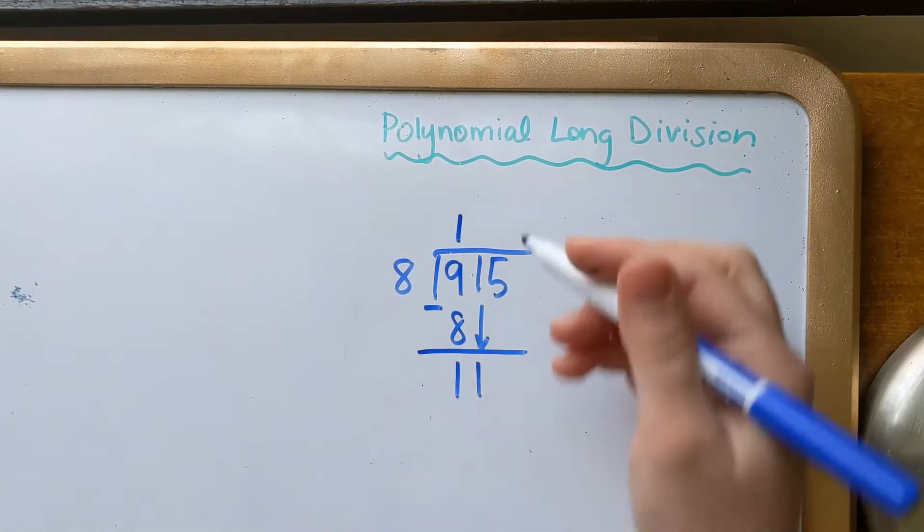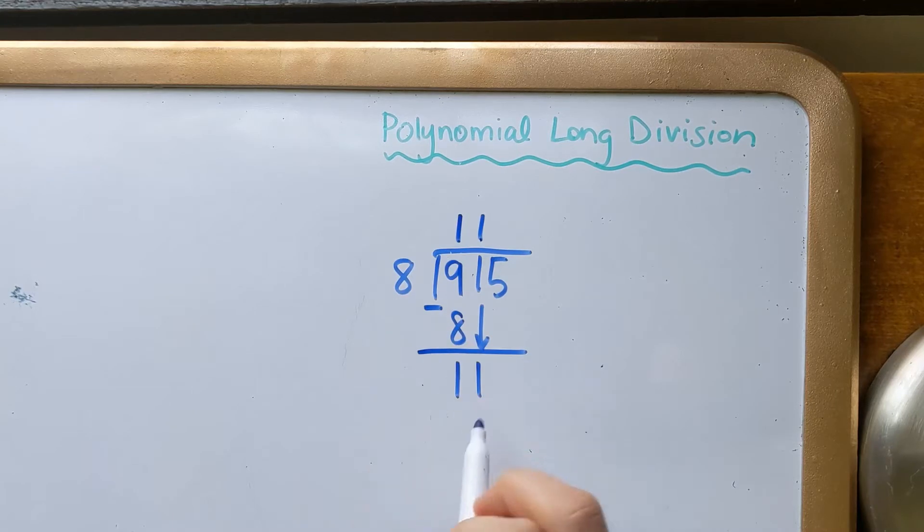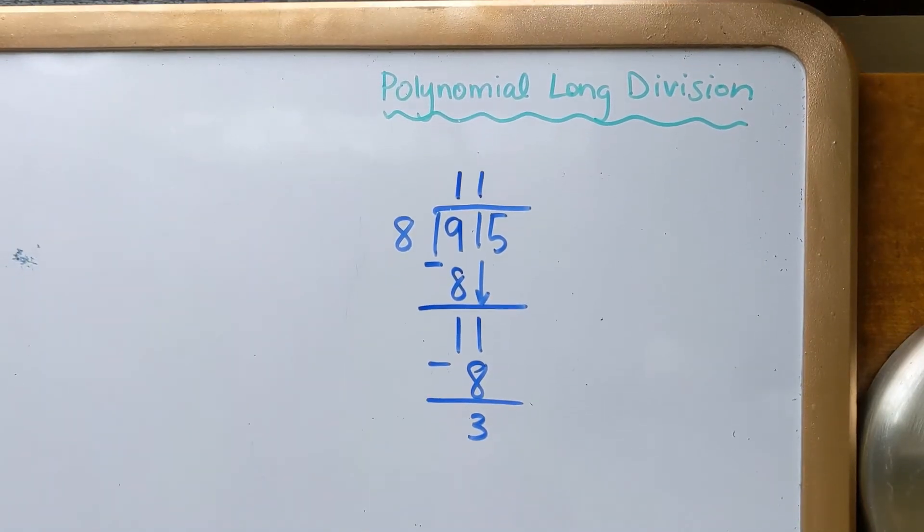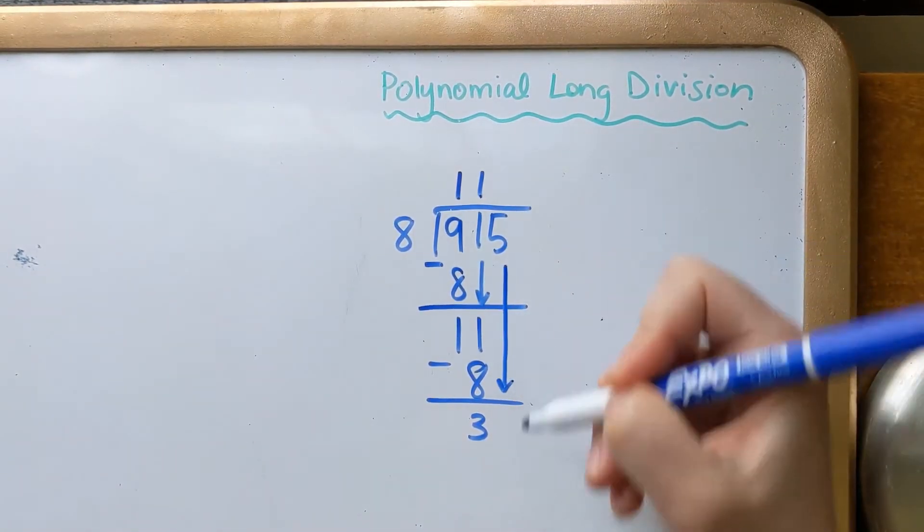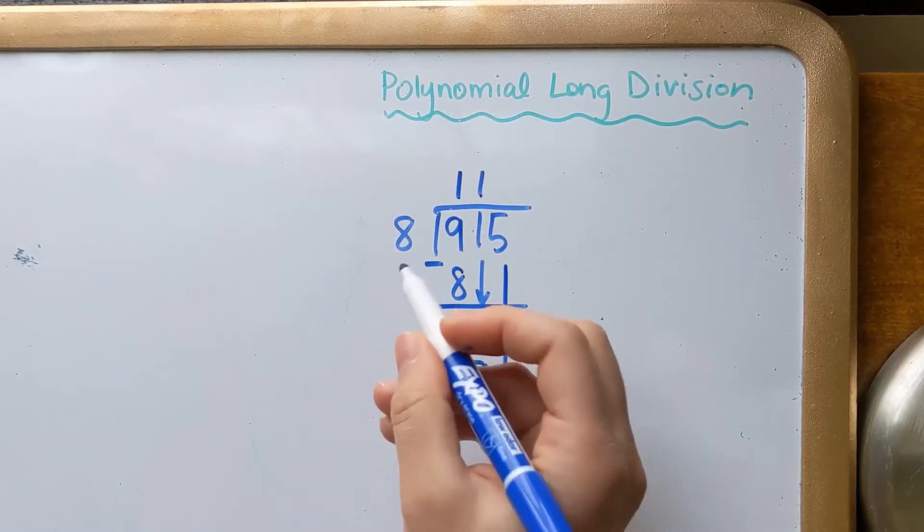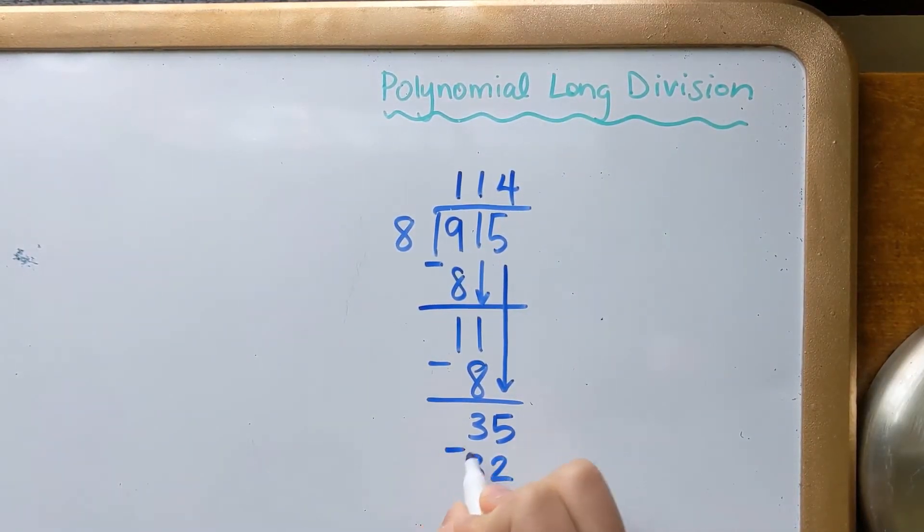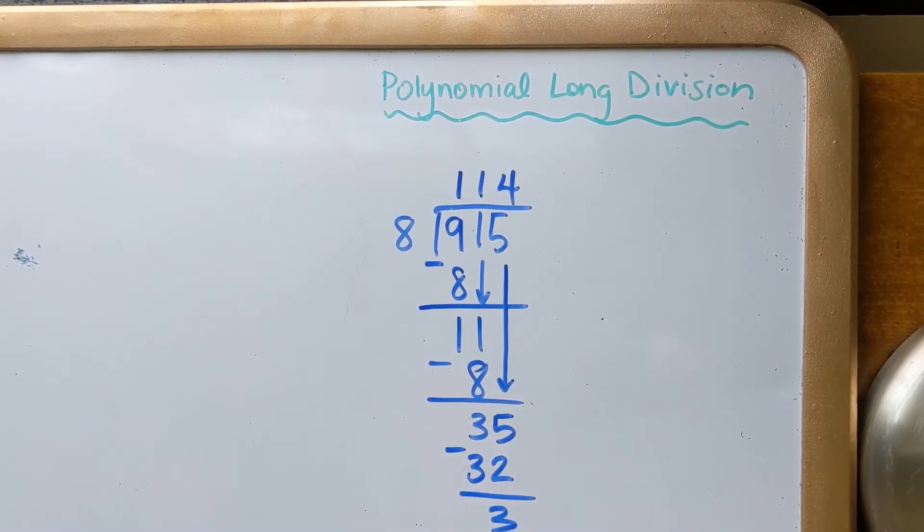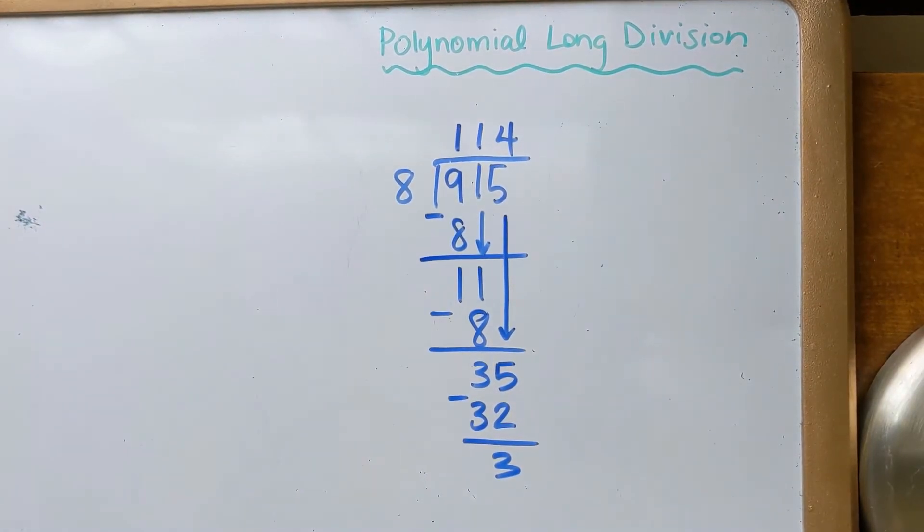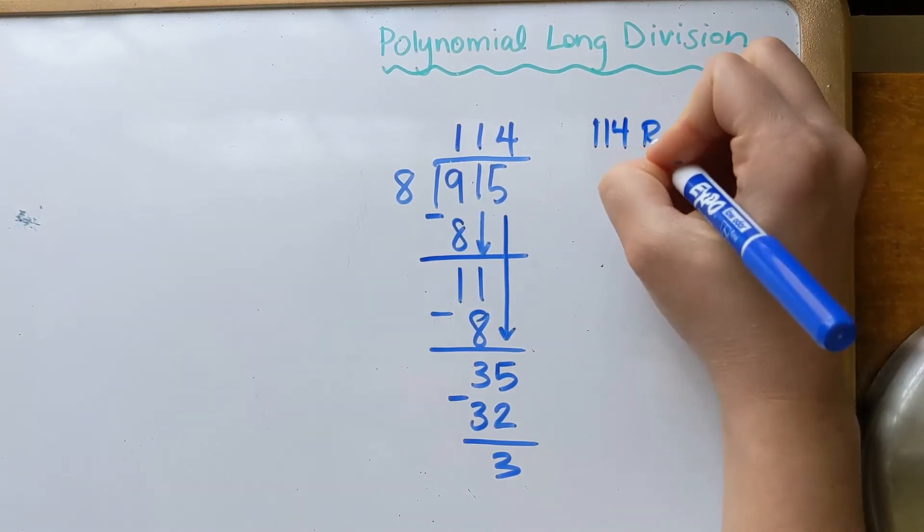Let's see, 8 would go into 11 also just once, so multiply that back through, 1 times 8 is 8, subtract, you get 3, and then you want to drop down that 5. So I would be looking at the number 35. Okay, 8 would go into 35 four times to give me 32, and I'm going to end up with a remainder of 3.